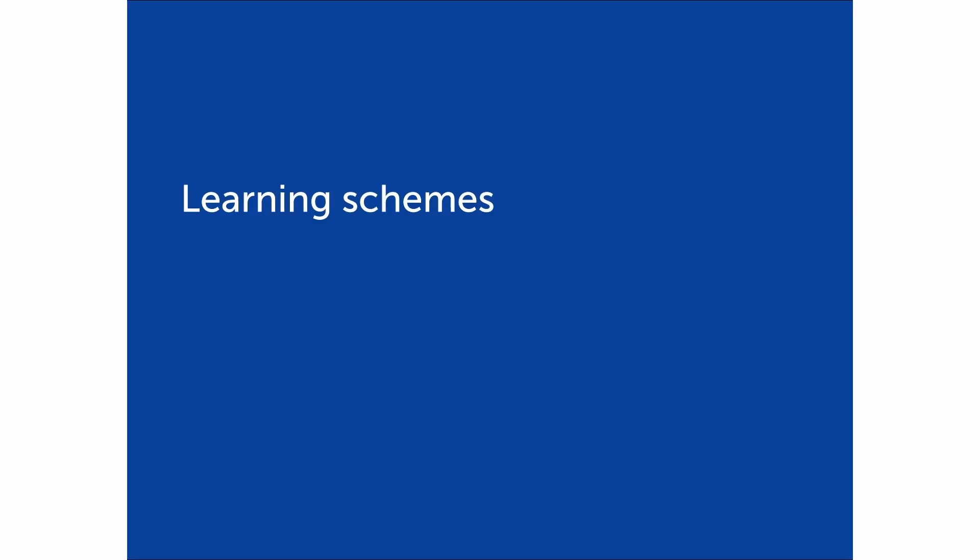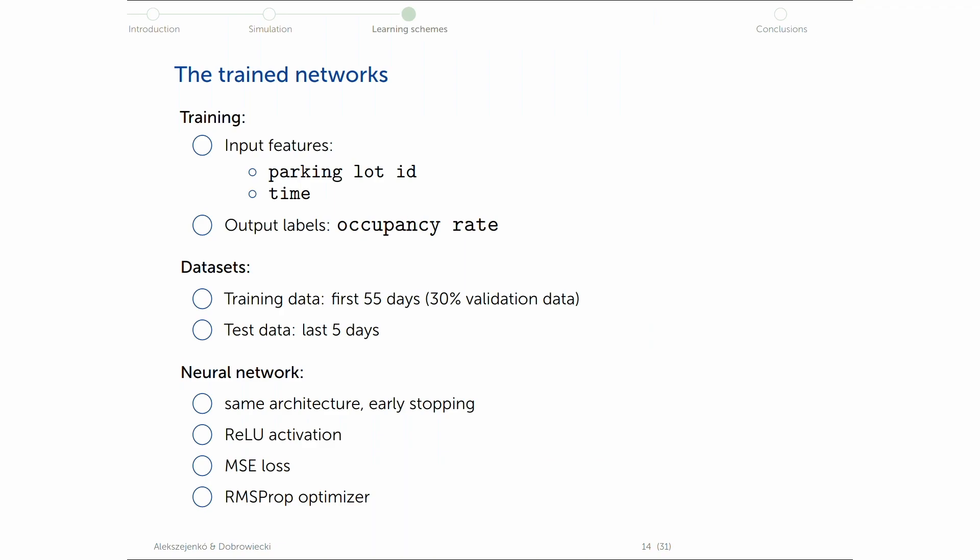So let me show the results we got with these different learning streams we tested. Let me fix it that for all of our scenarios or tests, we use the same neural network architecture, the same data. So for the first 55 days were the training data and the last five days was the test data for the learning streams.